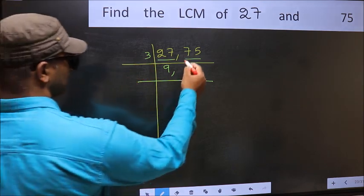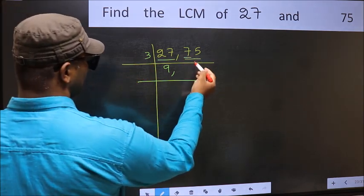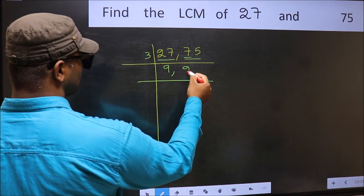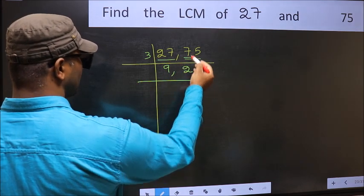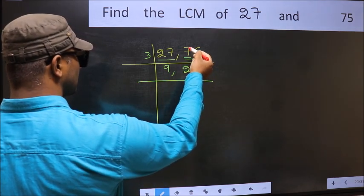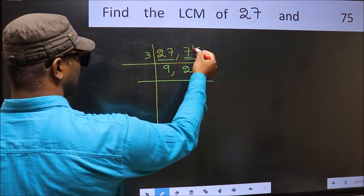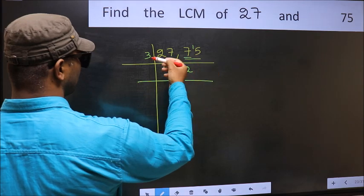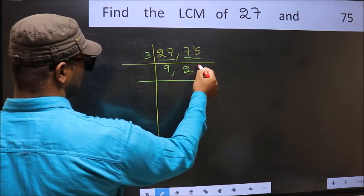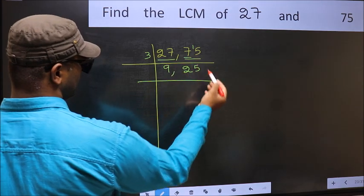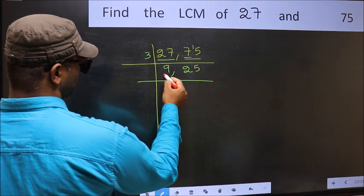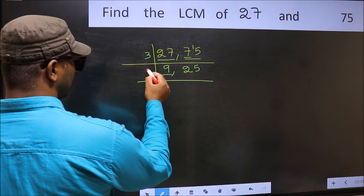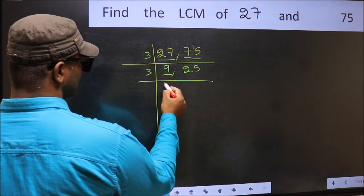Divide 75 by 3: the first digit is 7. The closest number to 7 in the 3 times table is 6. 7 minus 6 is 1, carry forward 1 to make 15. 3 times 5 is 15. Now for 27: 9 divided by 3 is 3, and 3 times 3 is 9.